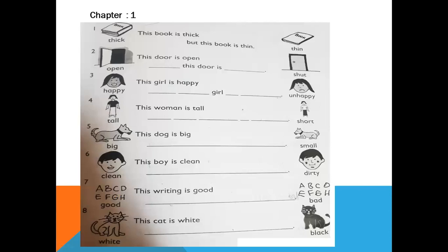Now we will do some exercises from the word book, chapter number one. Let's start. 'This book is thick but this book is thin.' We are joining these two sentences with the help of 'but.' We already read in lesson number one that 'but' joins sentences that have opposite ideas — opposite adjectives. This book is thick and this is thin, so we put 'but' here. All the remaining sentences will be joined with the help of 'but.'